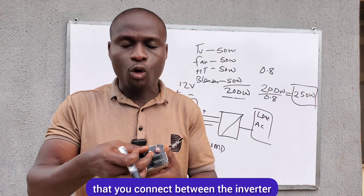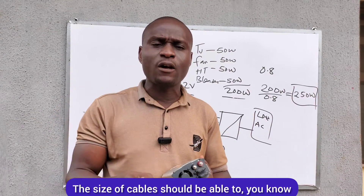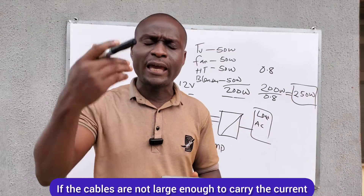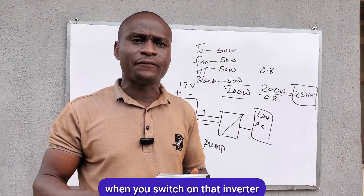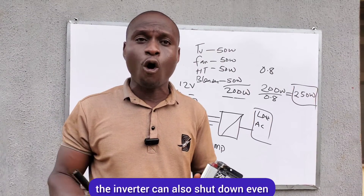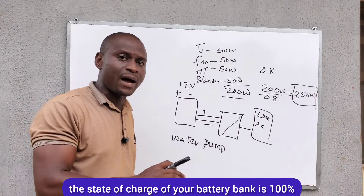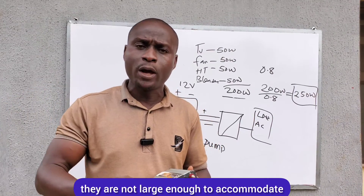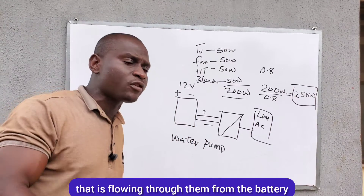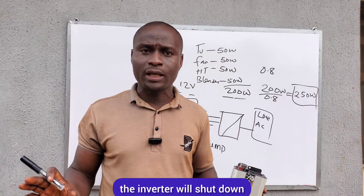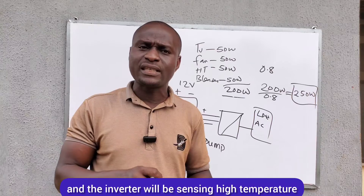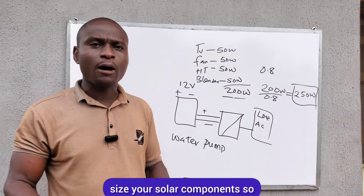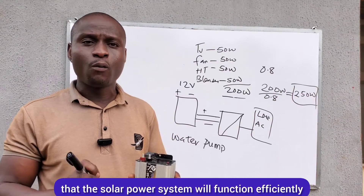You also need to look at the size of the cables connecting the inverter and the battery bank. The cables must be large enough to carry the amount of current flowing through them. If the cables are too small, when you switch on the inverter and connect your loads, the inverter can shut down — even if your battery bank is fully charged at 100%. The cables will become hot, the inverter will sense high temperature, and it will shut down. Always properly size your solar components so the system functions efficiently.